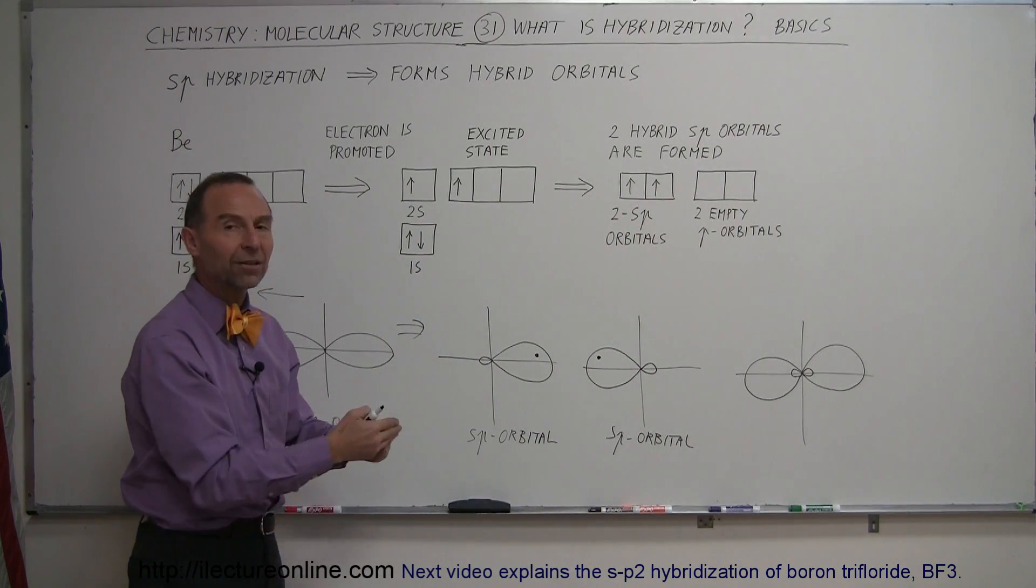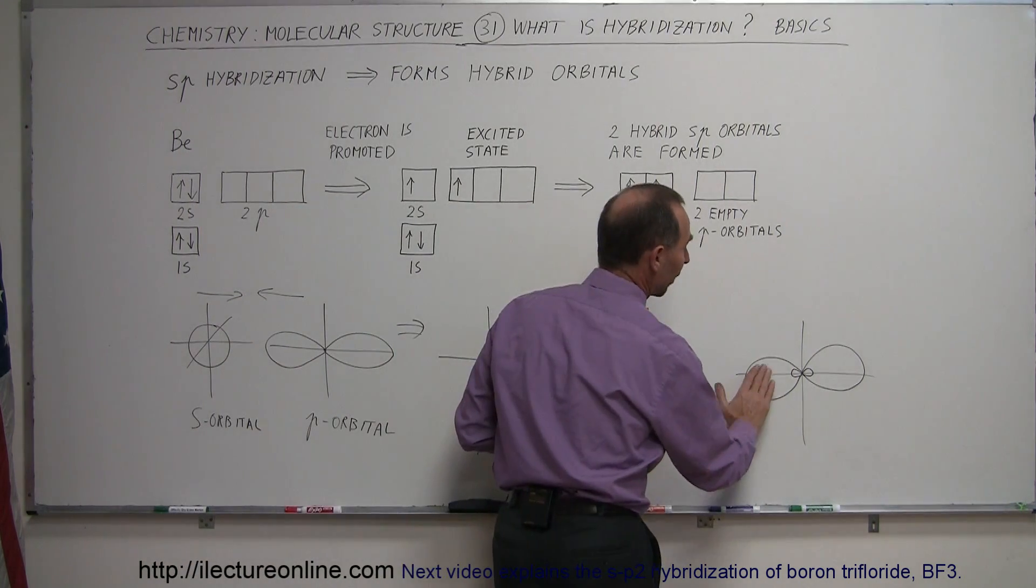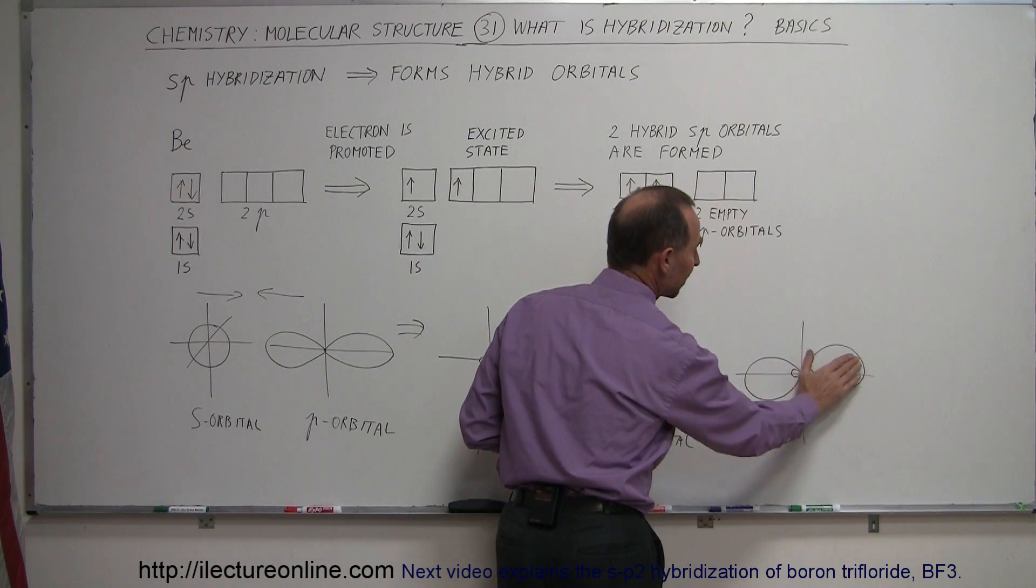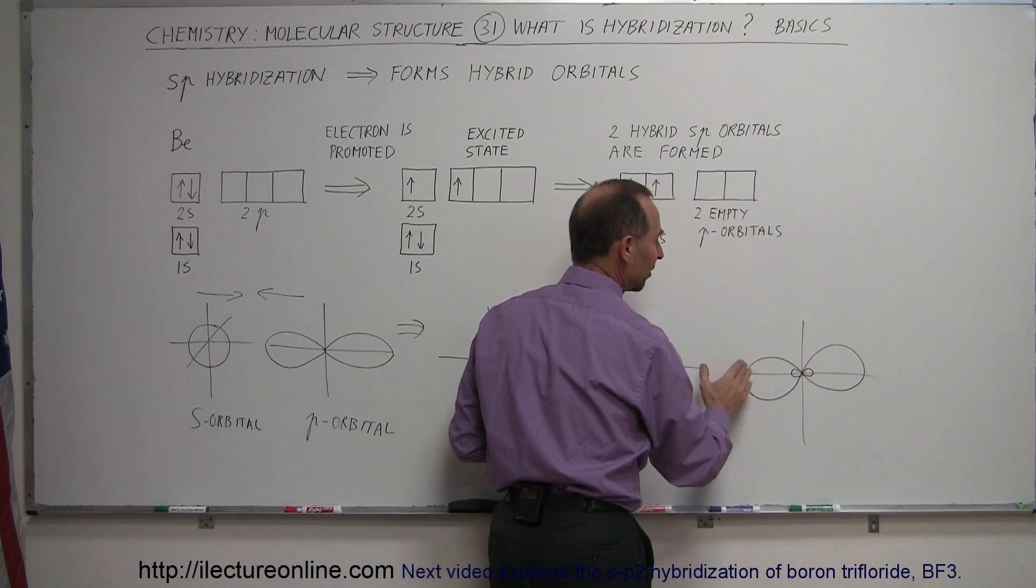And typically the small lobes may not necessarily be drawn, but you have to realize that they are there. So the vast majority of time, the one electron will spend its time in this lobe, and the other electron will spend its time in this lobe.